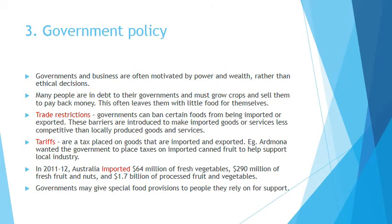Government policy is the third thing that affects food availability and distribution. You probably don't give government policy a second thought, but there's a lot happening that affects who gets food. Governments and businesses are often motivated by power and wealth and aren't always looking after the interests of everyone. Many people across the world are in debt to governments and are growing their crops and selling them to make money to pay back, and then often don't have enough food for themselves, their families or their villages.